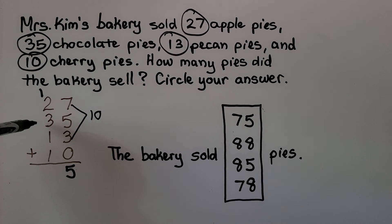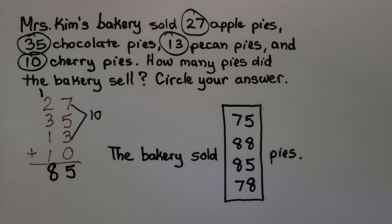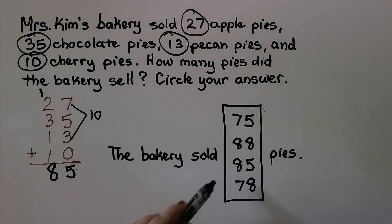Now we can add the tens. We have 3, 4, 5, 6, 7, 8. That's 85. The bakery sold—we circle 85. The bakery sold 85 pies.